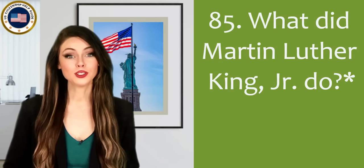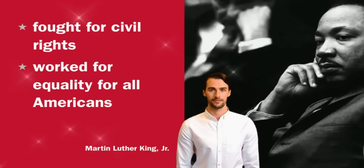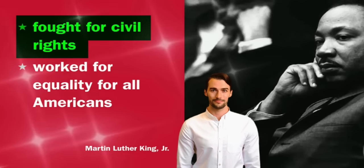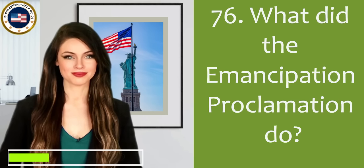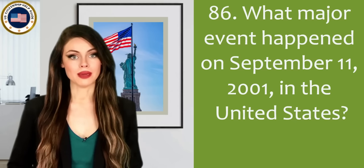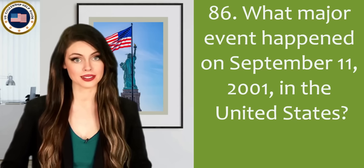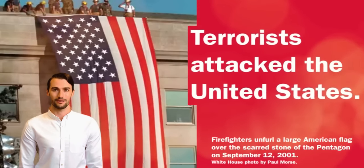What did Martin Luther King Jr. do? Fought for civil rights. What did the Emancipation Proclamation do? Freed the slaves. What major event happened on September 11, 2001 in the United States? Terrorists attacked the United States.